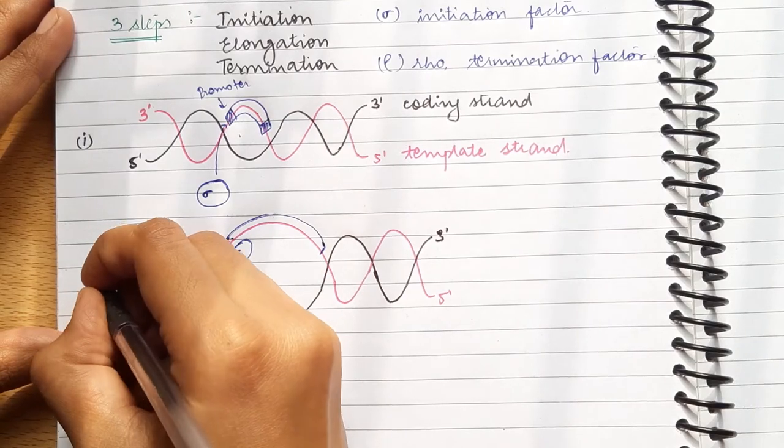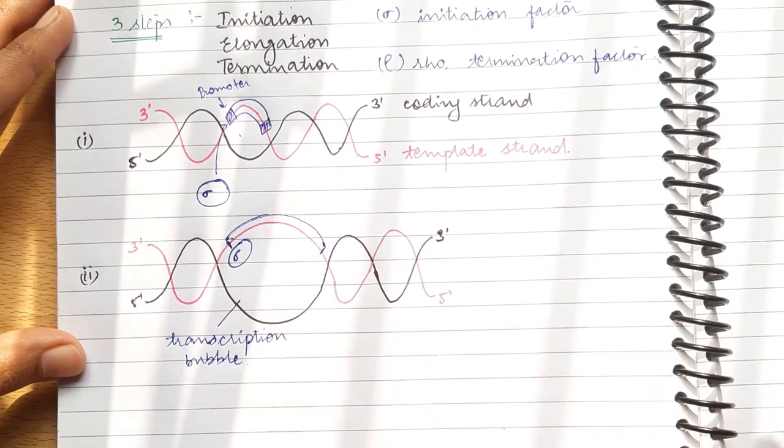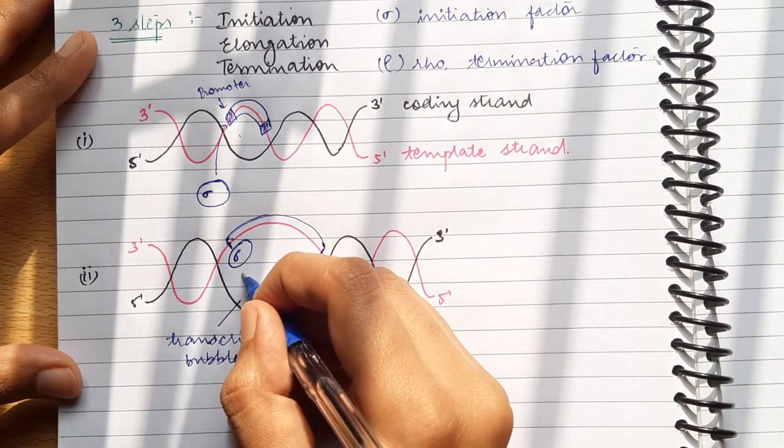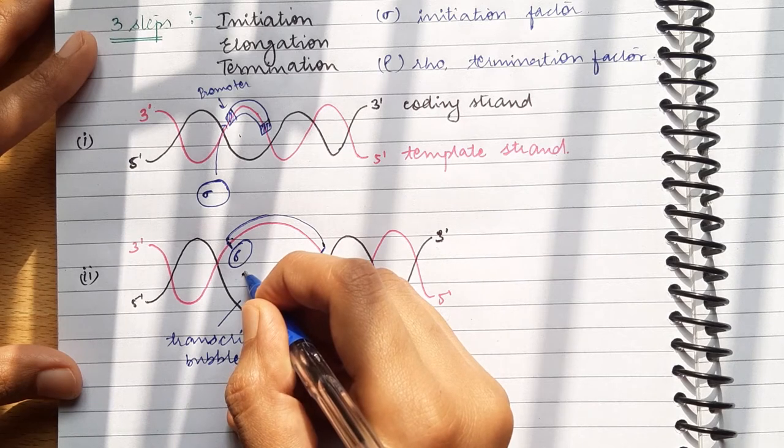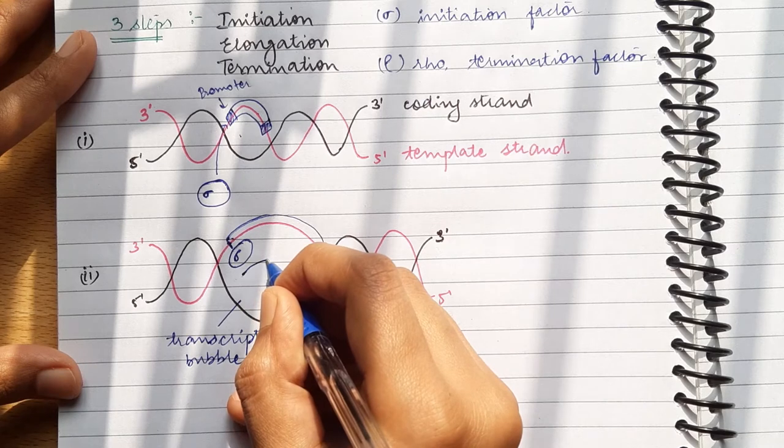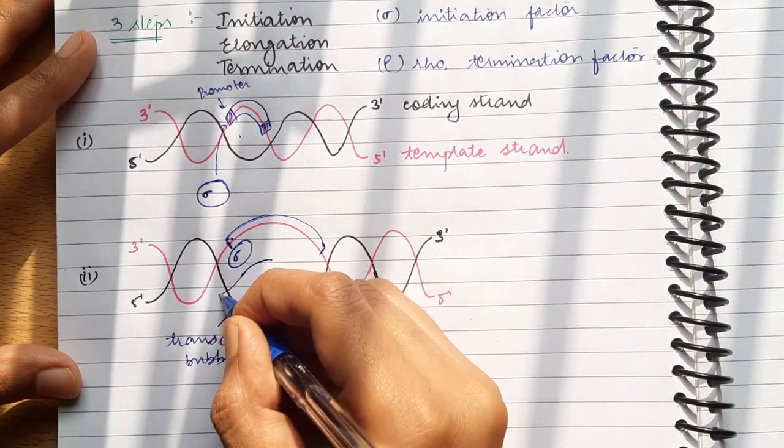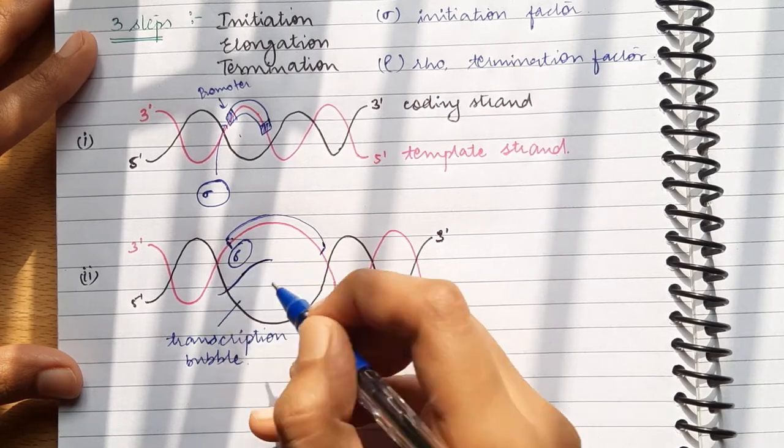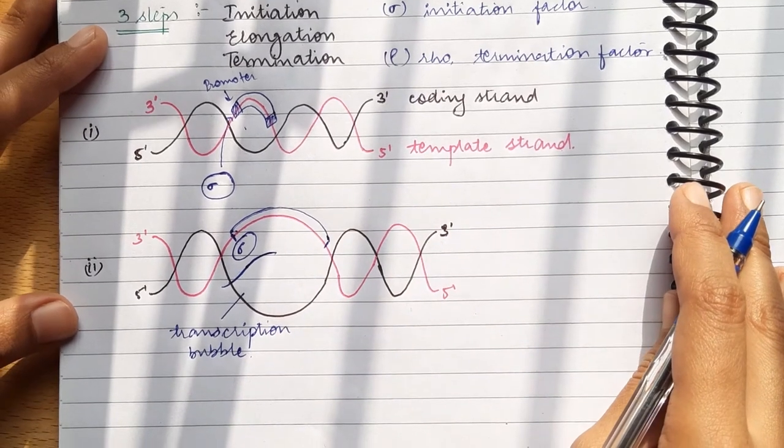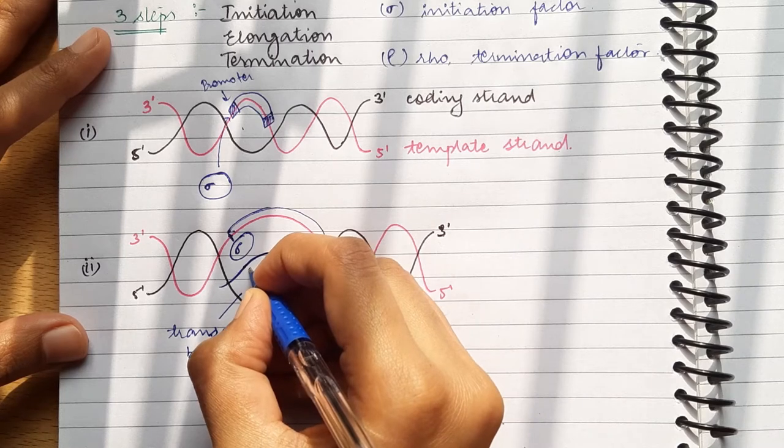RNA pol adds nucleotides in the direction five prime to three prime. On the other side, the mRNA that is forming is released in the opposite direction. The direction of synthesis and the direction of mRNA release are opposite.